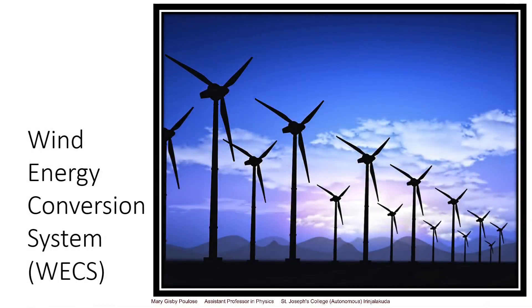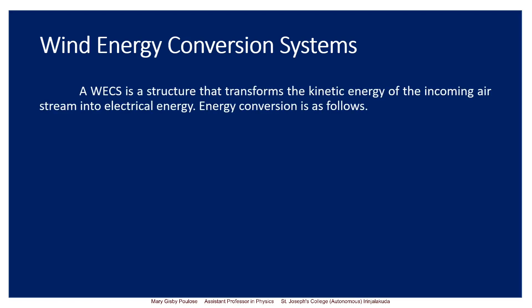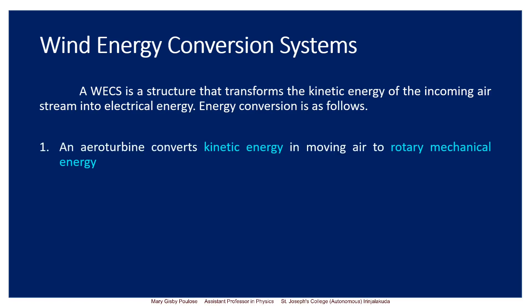In this session, let us learn about Wind Energy Conversion Systems, which we call WECS. WECS are basically windmills. A WECS is a structure that transforms the kinetic energy of the incoming air stream into electrical energy. The energy conversion process is as follows: a rotor turbine converts kinetic energy in moving air to rotary mechanical energy.